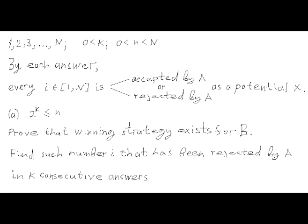The first question of this problem is to prove that if lowercase n is not less than 2 to the power of K, then a winning strategy exists for player B. The second question asks to prove that 2 to the power of K is the smallest lower limit for n. More specifically, we need to prove that for all sufficiently large K, there exists a number N greater than 1.99 to the power of K such that player B does not have a guaranteed winning strategy.